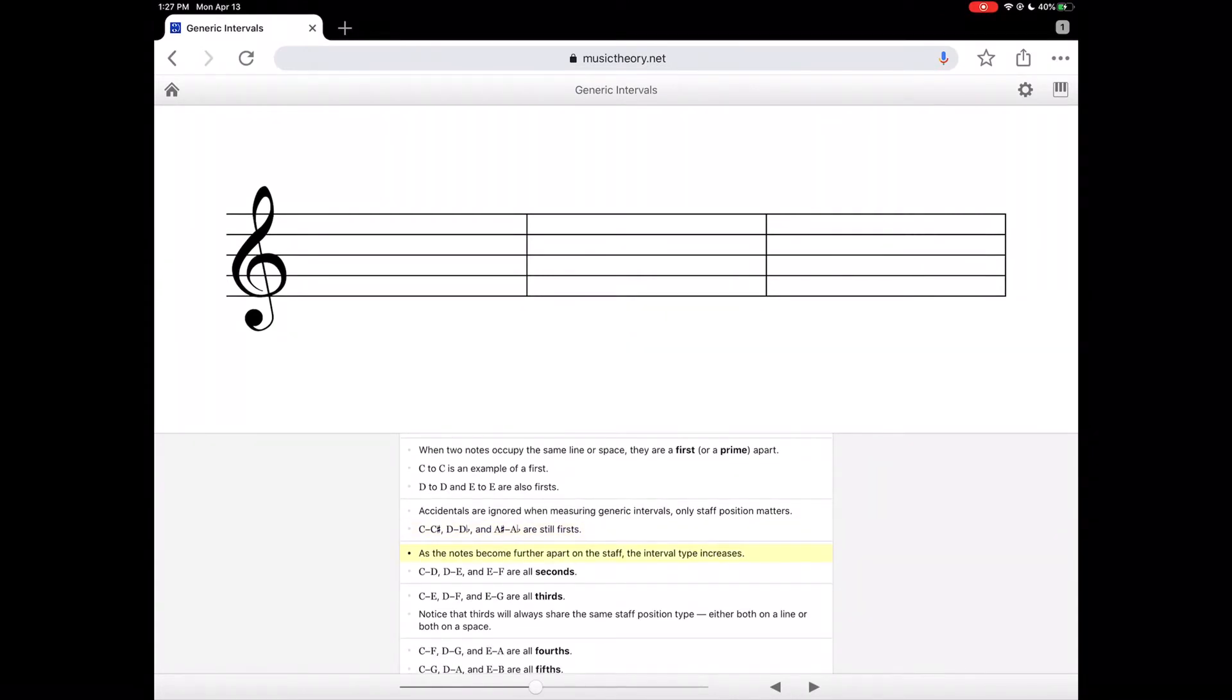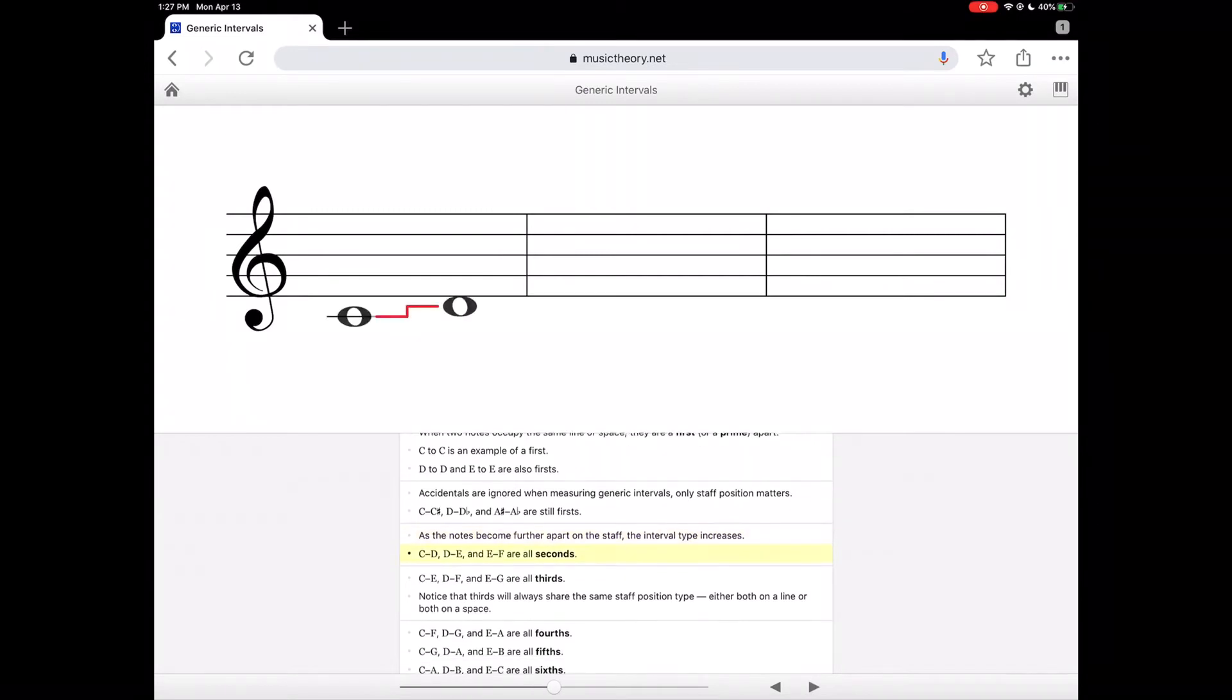As the notes become further apart on the staff, the interval type increases. C to D, D to E, and E to F are all seconds, for example. Notice how they do not share the same line or the same space. One will be a line while another is a space, and they will be right next to each other.